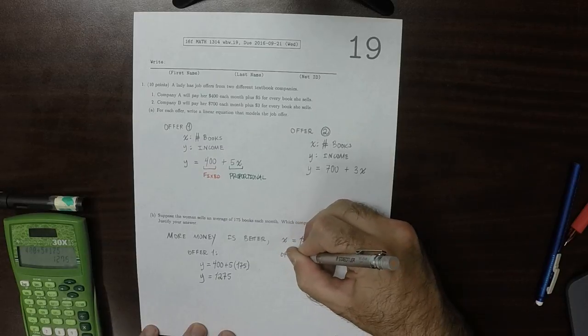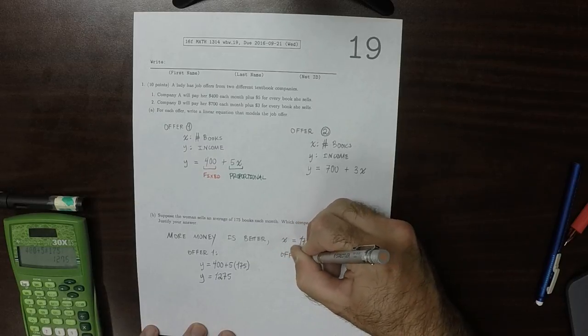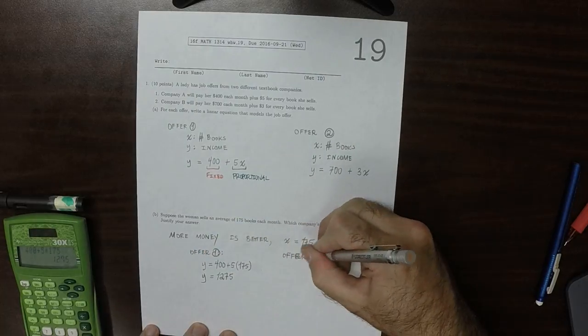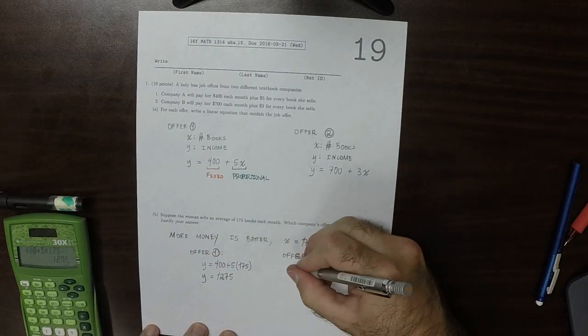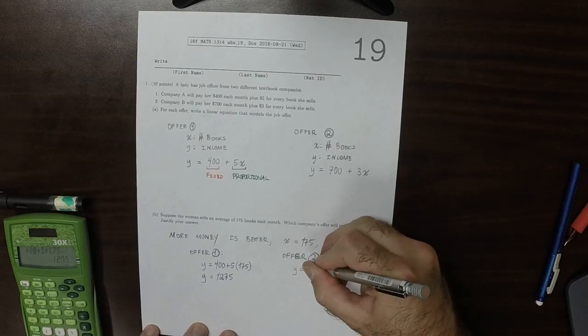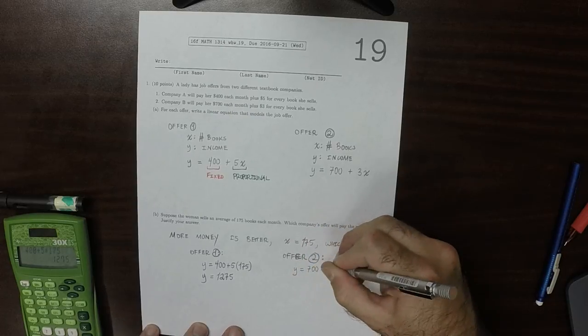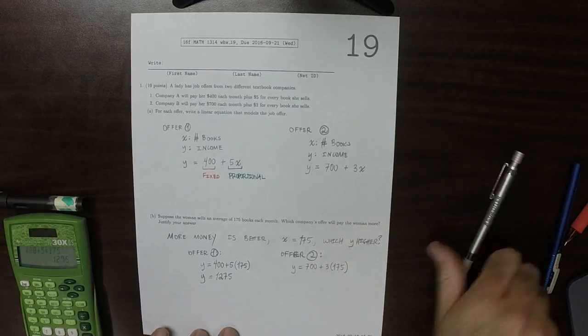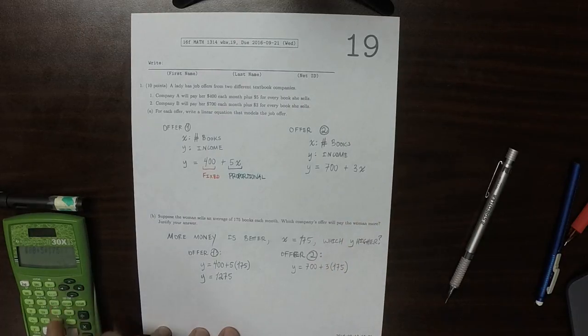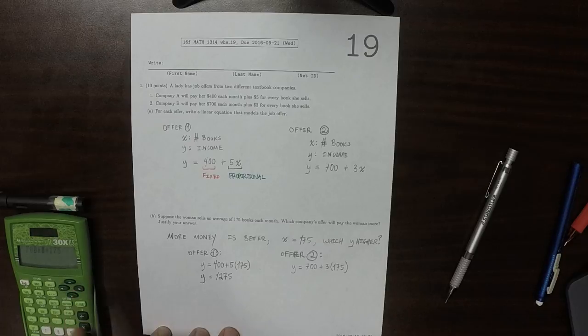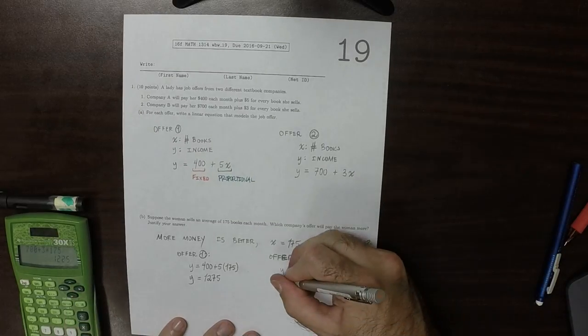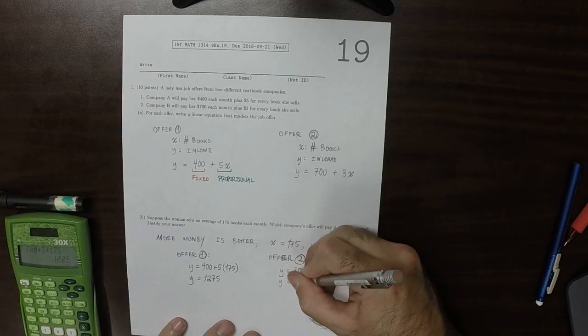Offer 2, that would be y is 700 plus 3 times 175, when plugged into a calculator that is 1225, almost the same.